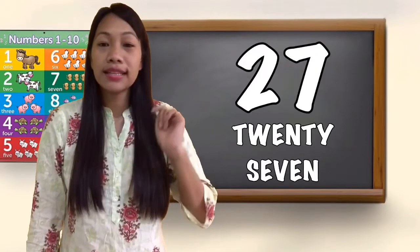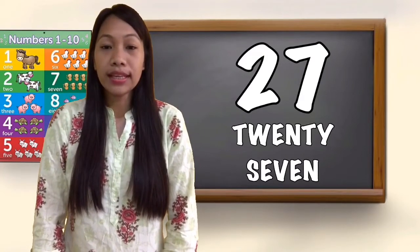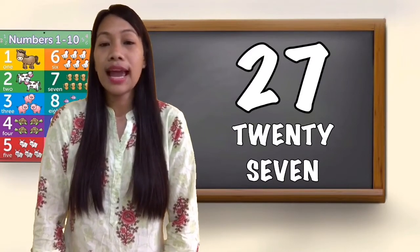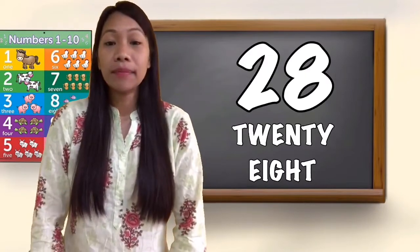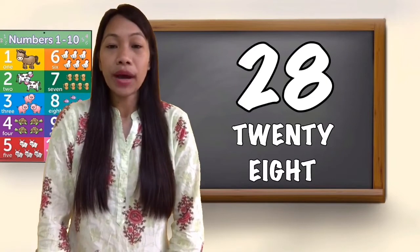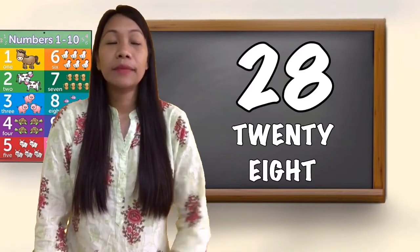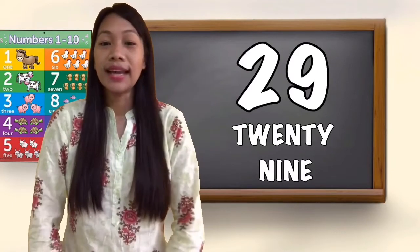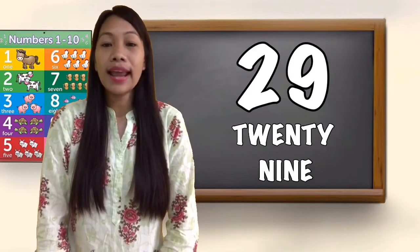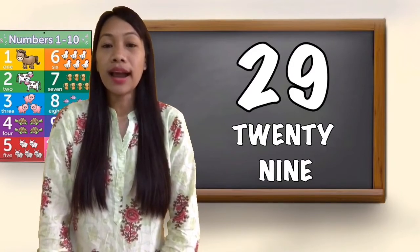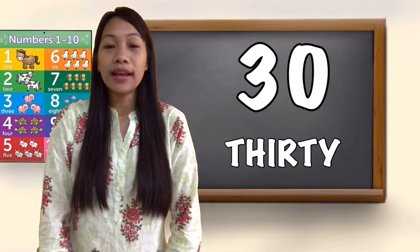26, 27, T-W-E-N-T-Y twenty, S-E-V-E-N seven, twenty-seven. 28, T-W-E-N-T-Y twenty, E-I-G-H-T eight, twenty-eight. 29, T-W-E-N-T-Y twenty, N-I-N-E nine, twenty-nine. 30, T-H-I-R-T-Y, thirty.